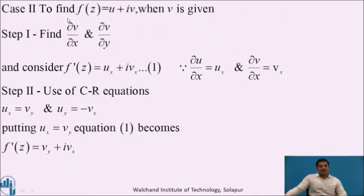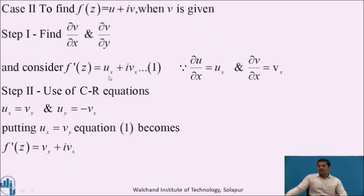Similarly, in Case 2, the imaginary part v is given and we again want to find the analytic function f(z). Step 1 is the same: take the partial derivatives of the imaginary part, finding ∂v/∂x and ∂v/∂y, and then apply the formula for the derivative of an analytic function: f'(z) = ux + i·vx. In this expression the real part u is not known to us, so ux is also unknown. Since f is analytic, its real and imaginary parts satisfy the CR equations.